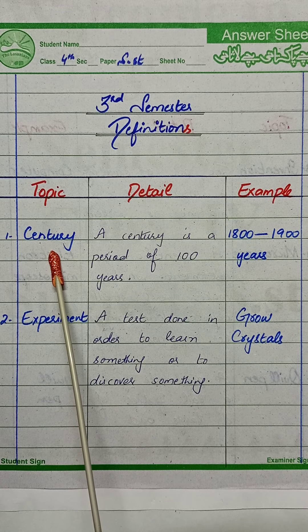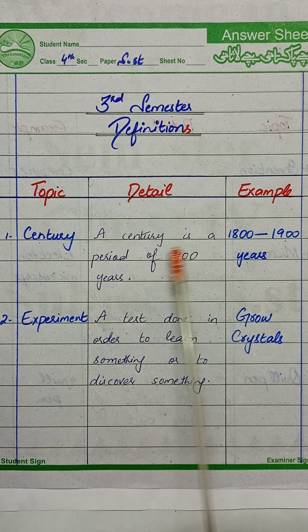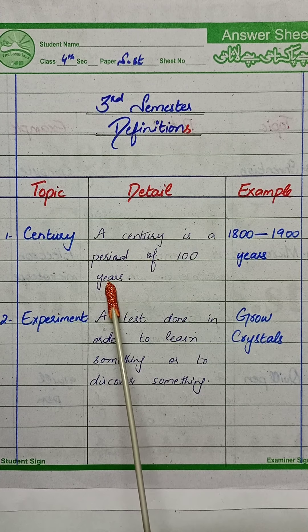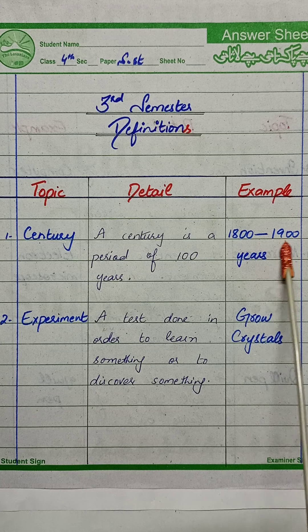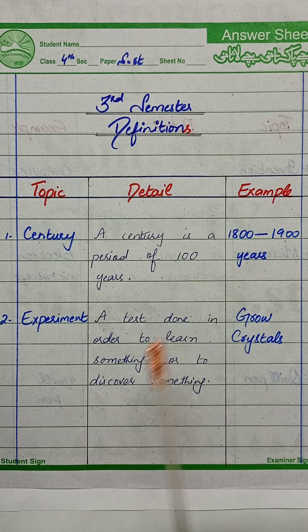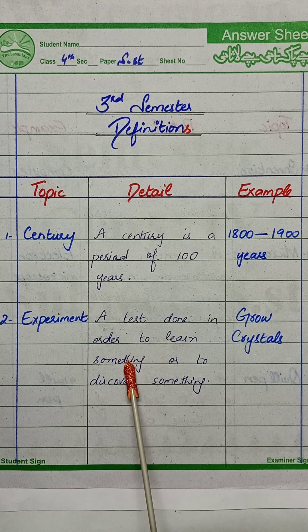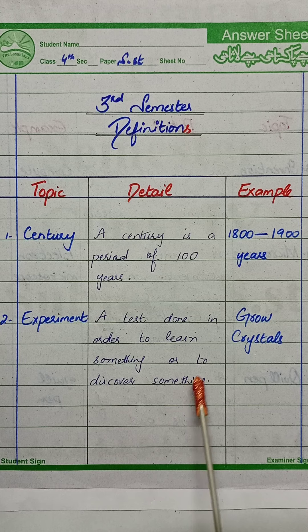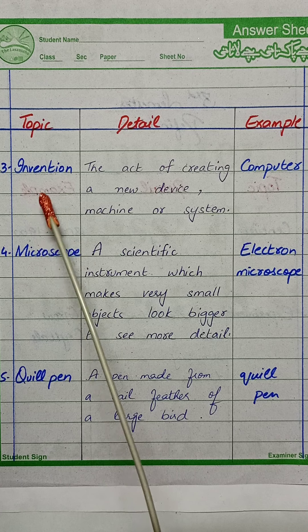Our first word is century. A century is a period of 100 years. Example: 1800 to 1900 years. Next word is experiment — a test done in order to learn something or to discover something. Our example is growing crystals.